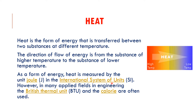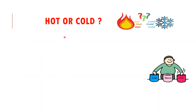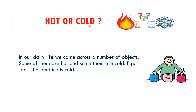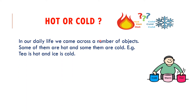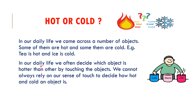So the unit of heat is Joule in SI units; British Thermal Unit and calorie are also commonly used. In our daily life we come across a number of objects — some of them are hot and some of them are cold. For example, tea is hot and ice is cold. We often decide which object is hotter than another by touching it, but we cannot always rely on our sense of touch to decide how hot or cold an object is.